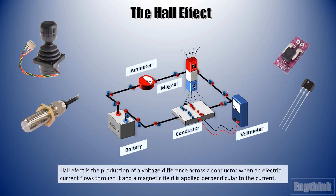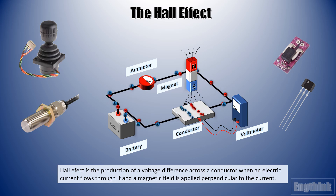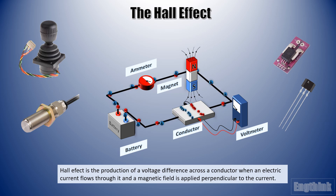Finally, to summarize: the Hall effect is the production of a voltage difference across a conductor when an electric current flows through it and a magnetic field is applied perpendicular to the current. Thanks for watching, and if you like this content, consider subscribing to the channel. See you!